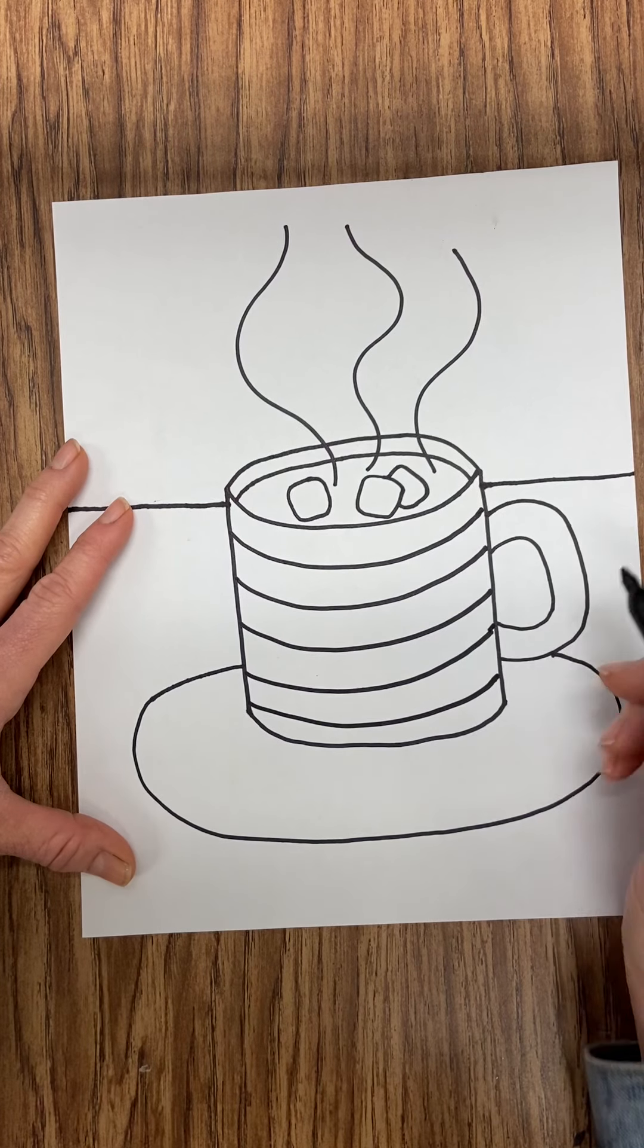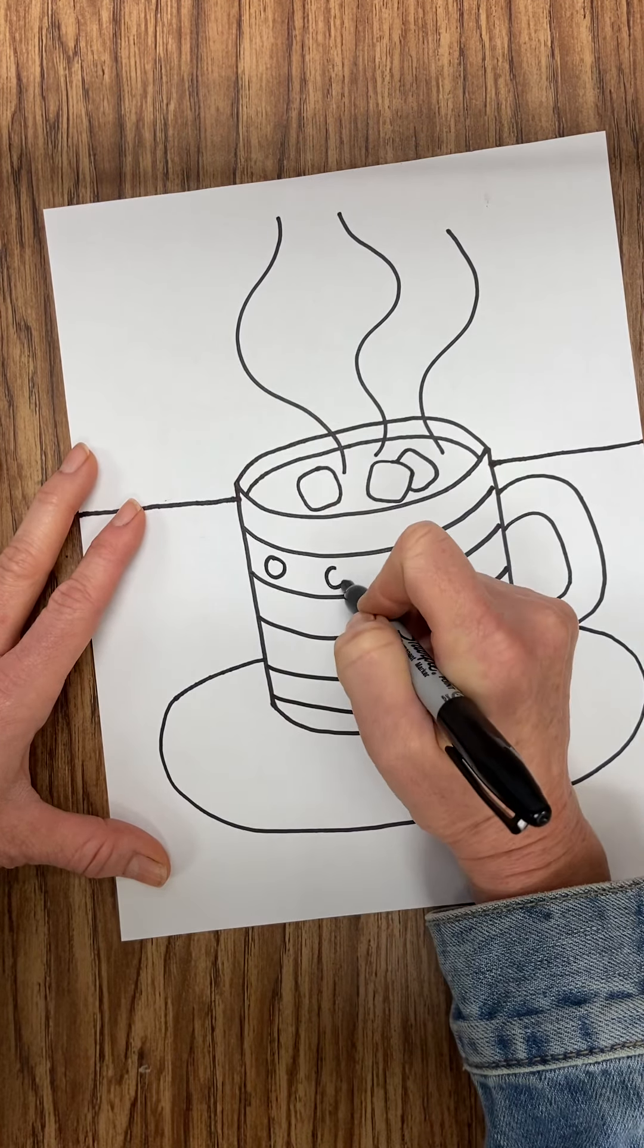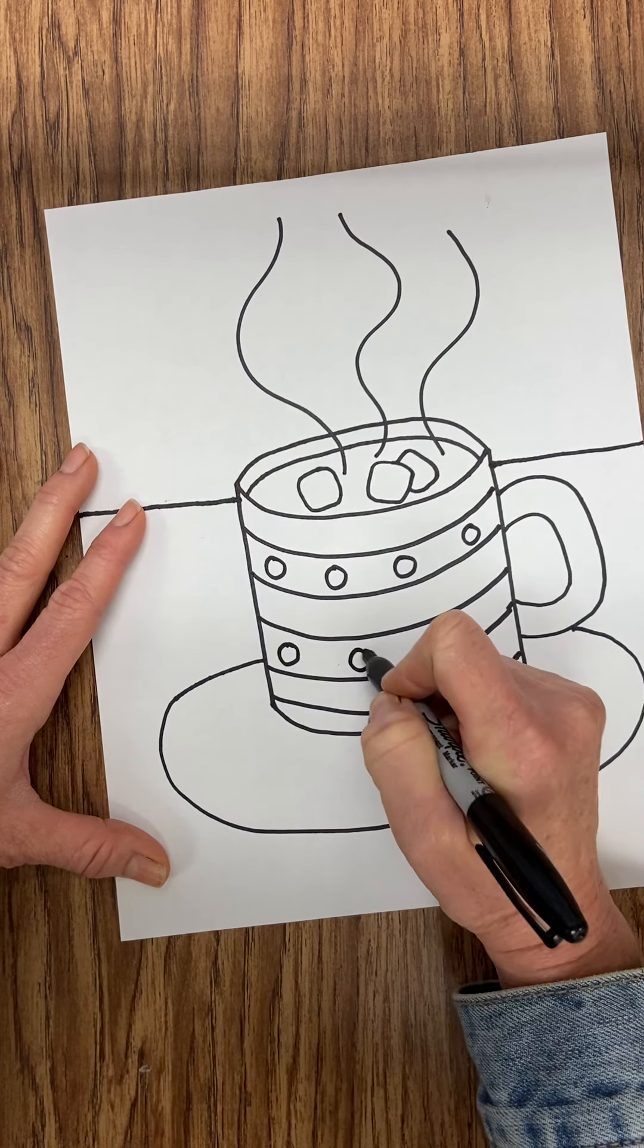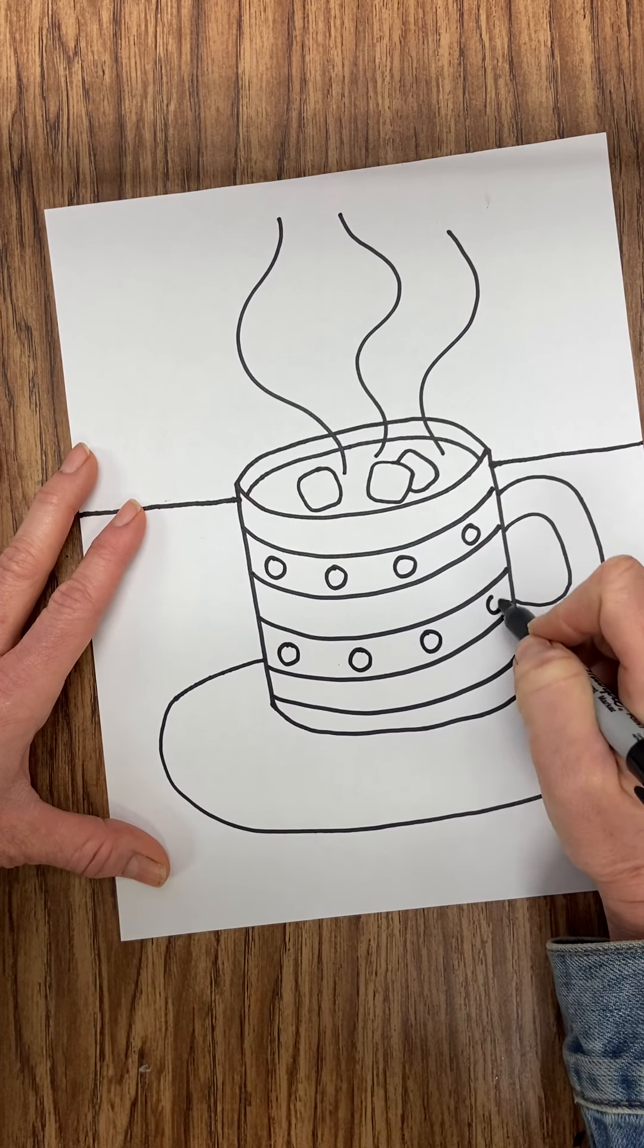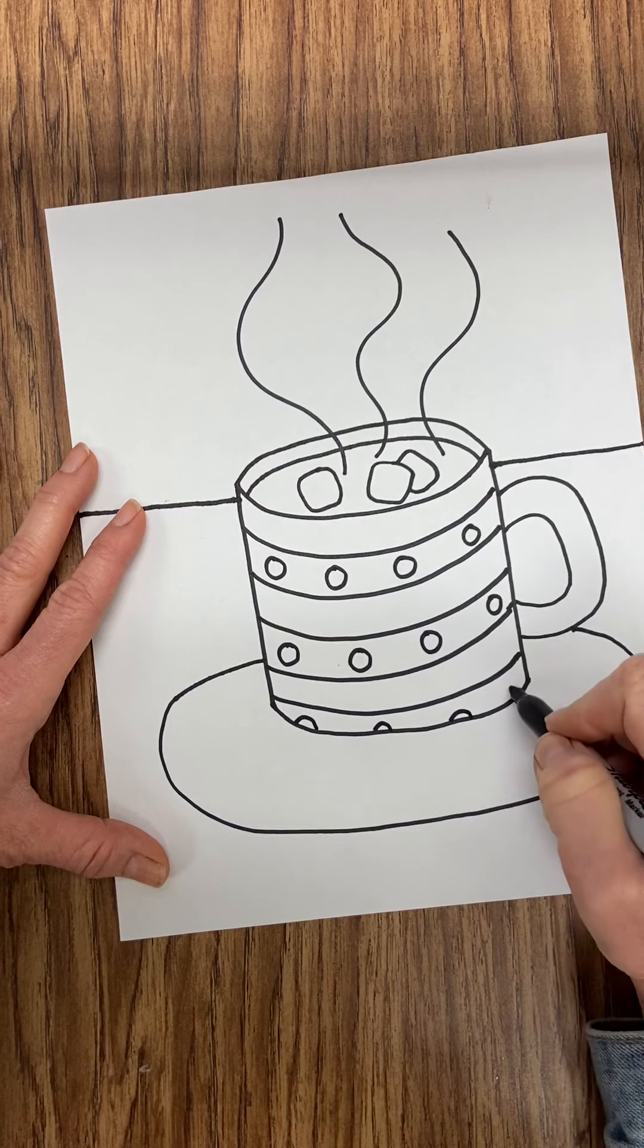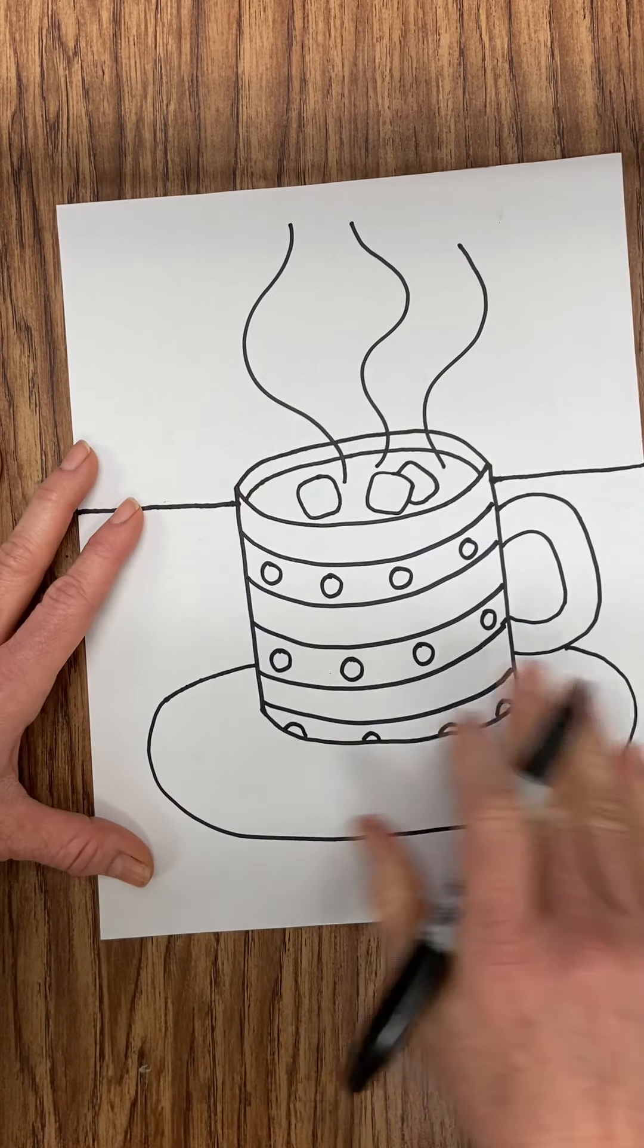And maybe I can even add a shape pattern. A shape pattern is when you repeat a shape. So on mine, I'm deciding to repeat some circles. I would like your pattern not to be the same as my pattern. I would like you to come up with your own pattern for your mug.